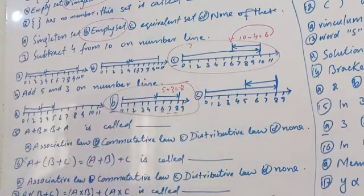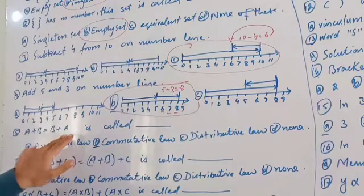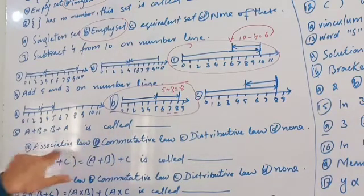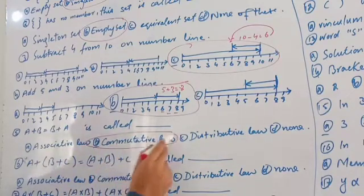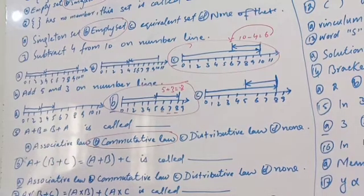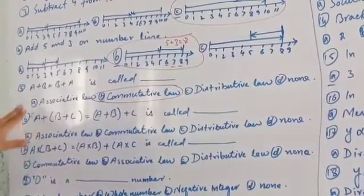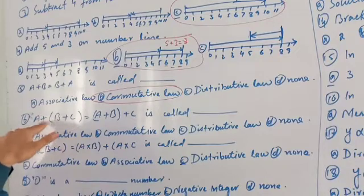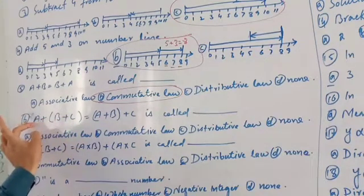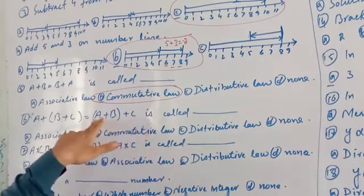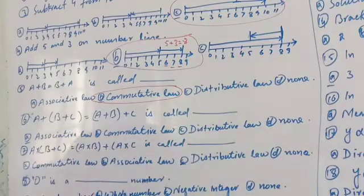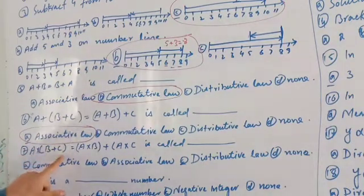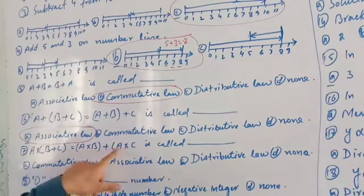Five plus three is equal to eight. For number ticks: a plus b is equal to b plus a — this is called the commutative law. Then a plus b plus c — this is the associative law. The distributive law: a multiplied by (b plus c) is equal to a multiplied by b, plus a multiplied by c.